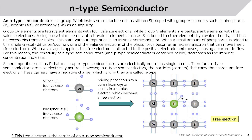When a small amount of phosphorus is added to the single crystal (diffusion/doping), one of the valence electrons of the phosphorus becomes an excess free electron that can move freely. When a voltage is applied, this free electron is attracted to the positive electrode and moves, causing current to flow. The resistivity of n-type semiconductors decreases as impurity concentration increases. Silicon and impurities such as phosphorus are electrically neutral as single atoms; therefore, n-type semiconductors are also electrically neutral overall.